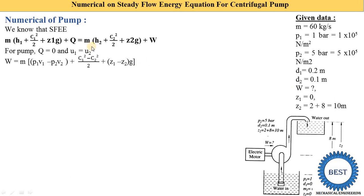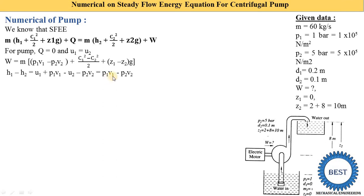Rearranging for work done, with the pressure terms on the left side: W = m[(p1v1 − p2v2) + (c1²/2 − c2²/2) + (z1 − z2)·g]. Since u1 = u2 those terms cancel, leaving only the p1v1 − p2v2 terms, and Q = 0 is not included.